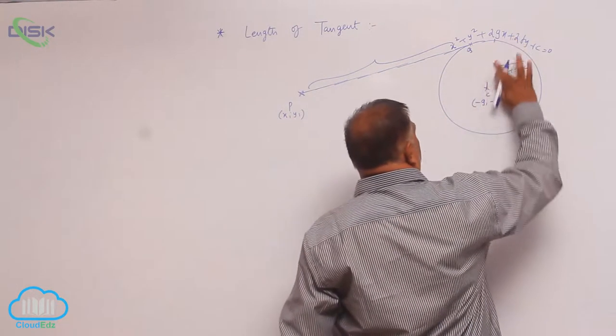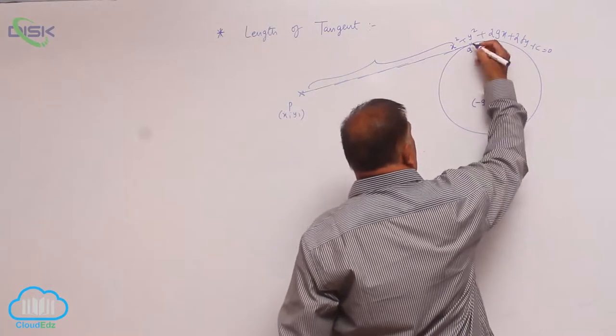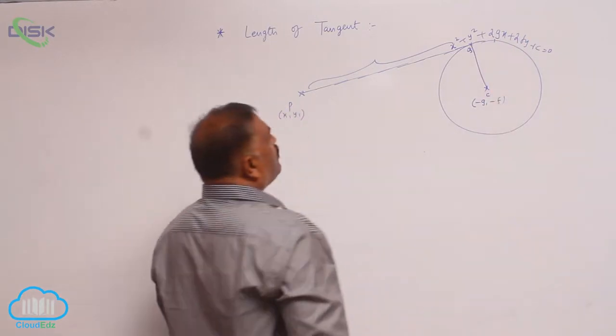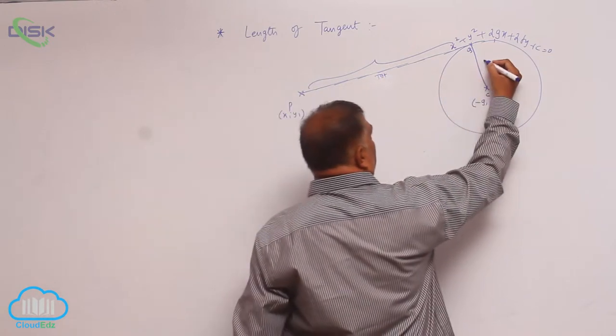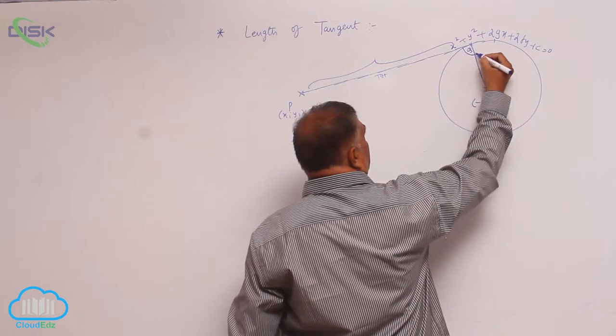Instead of writing radius like this, let us write radius like this also. We know that this is tangent line means automatically this is normal and this angle will be 90 degrees.